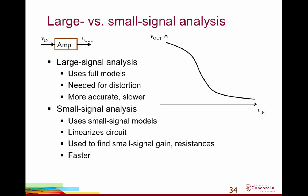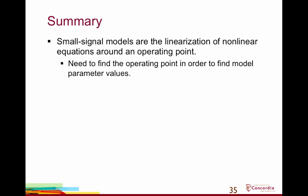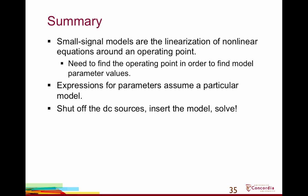In summary: small signal models are linearizations of nonlinear equations around an operating point. We need to find the operating point to determine model parameter values. The expressions for small signal parameters assume a particular model but generally boil down to derivatives of measurable IV characteristics. When doing small signal analysis, DC sources are shut off — voltage sources become short circuits, current sources become open circuits. Insert the small signal model and solve. If you have any questions, please email gcowen@ece.concordia.ca. Thanks for paying attention.